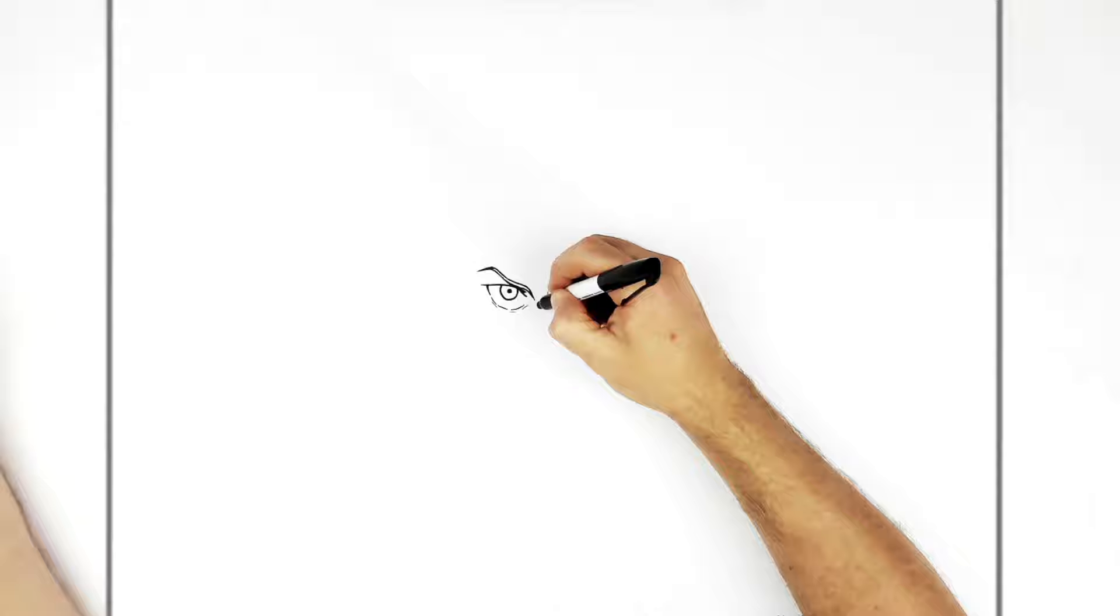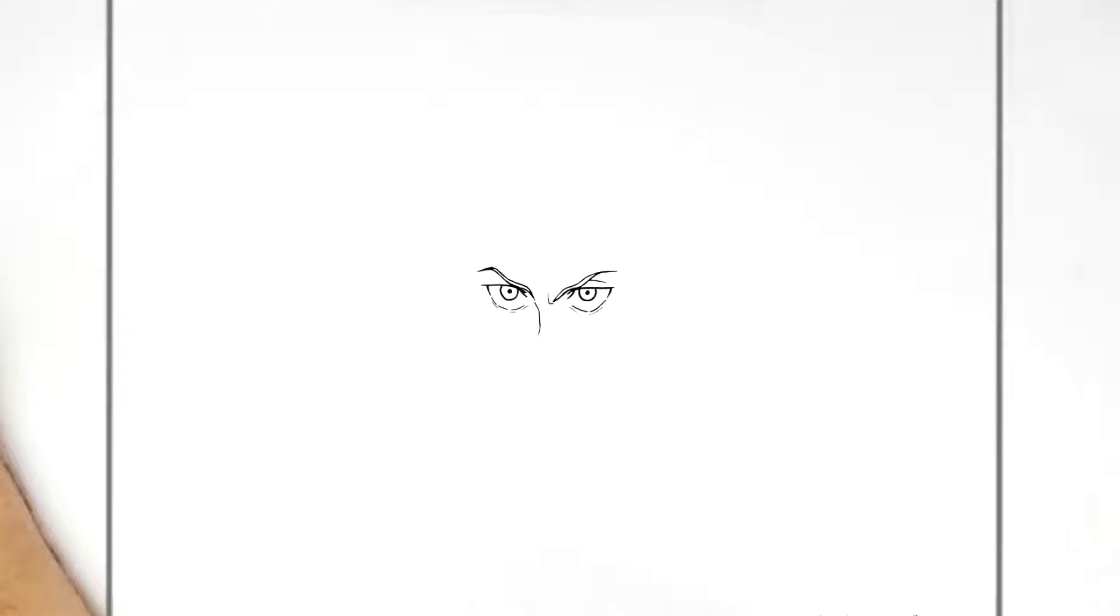So his nose comes out from this, so we go diagonal straight down, it goes diagonal again. This type of nose right, so they do nostrils.